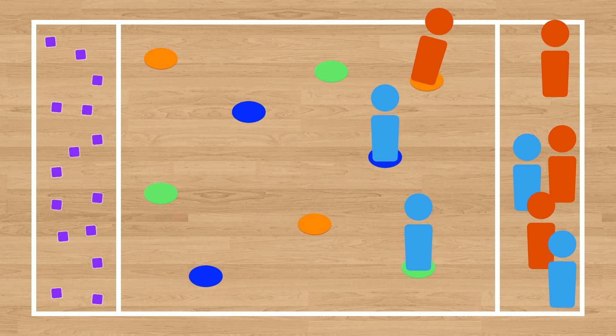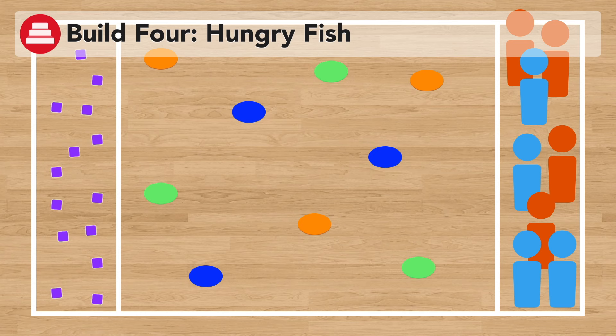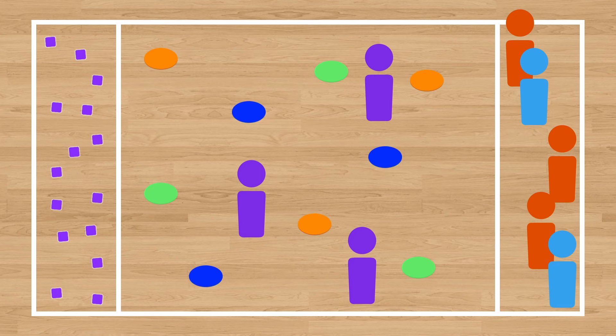Now we're ready for build four, in which we'll be introducing the tags to the game. In build four, we're going to be taking some of the students who are now going to be turned into fish. The fish are the tags. Fish attempt to tag frogs and toads as they cross the river.